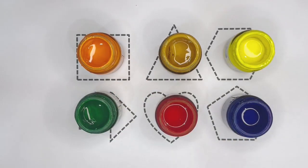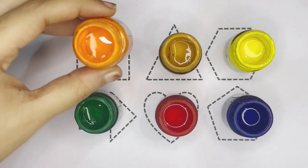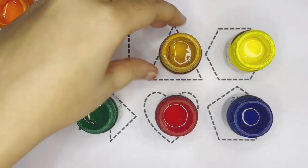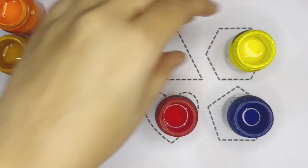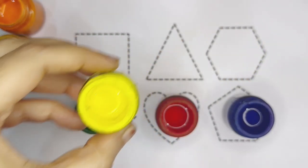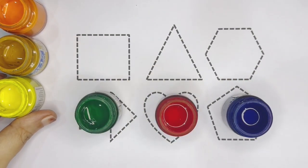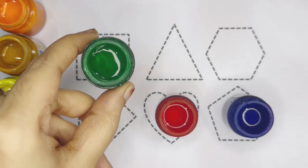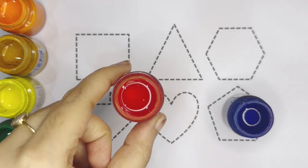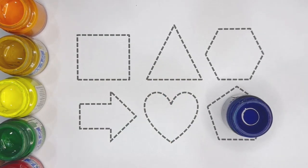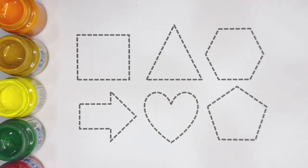Hello kids, welcome to new video. Let's learn 2D shapes. These are the 2D shapes. Now let's learn the name of the color kids. This is orange color, golden color, yellow color, dark green color, red color, blue color.